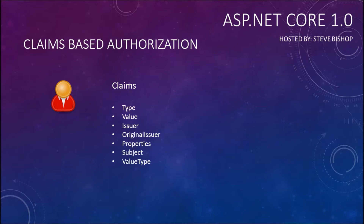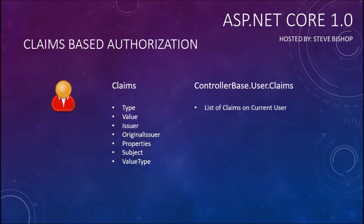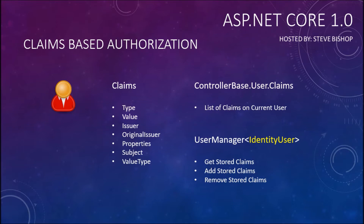To find out what the claims are on a currently logged-in user, we can use the user object that is a property on the controller base. On the user property there is a claims property, and this is going to contain an IEnumerable of claims — a list of claims on the current user. Additionally, we can use the UserManager, passing in a type parameter of a class that inherits from IdentityUser, and on the UserManager we can get stored claims, add stored claims, and remove stored claims.